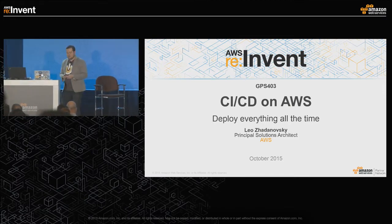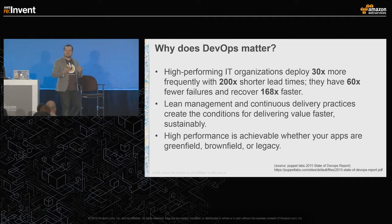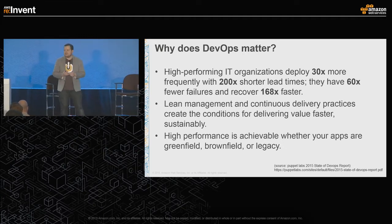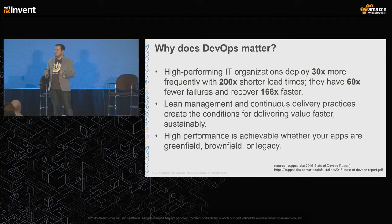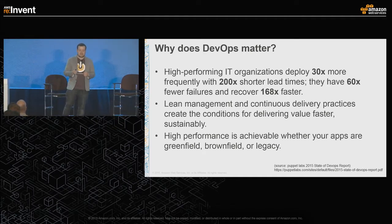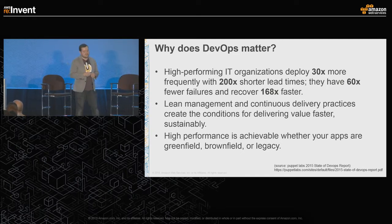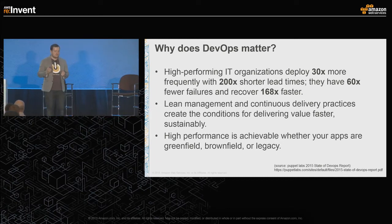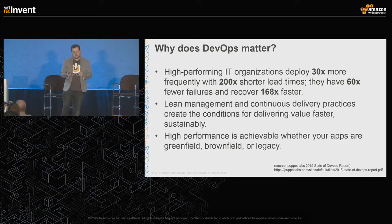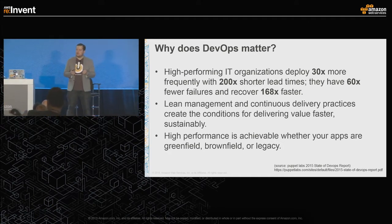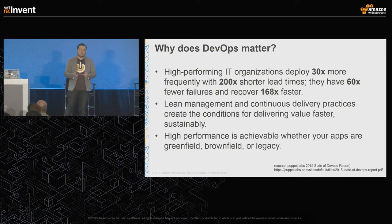Why does DevOps matter? Why is it important for you? According to the Puppet Labs 2015 State of DevOps report, high-performing IT organizations deploy 30 times more frequently with 200 times shorter lead times, and they have 60 times fewer failures and recover 168 times faster. Lean management and Continuous Delivery practices create the conditions for delivering value faster and more sustainably, whether your applications are Greenfield, Brownfield, or Legacy.